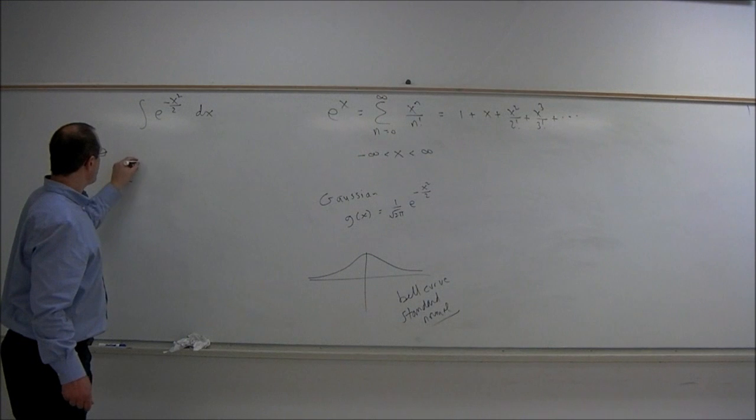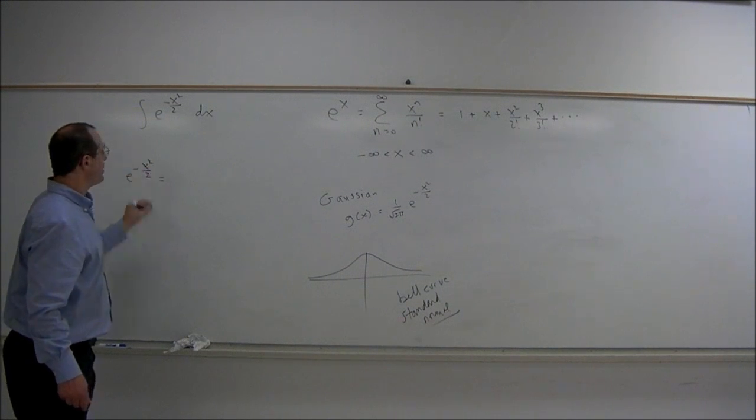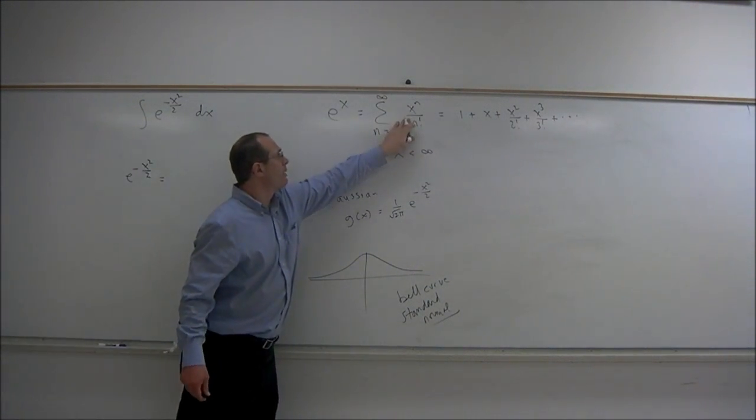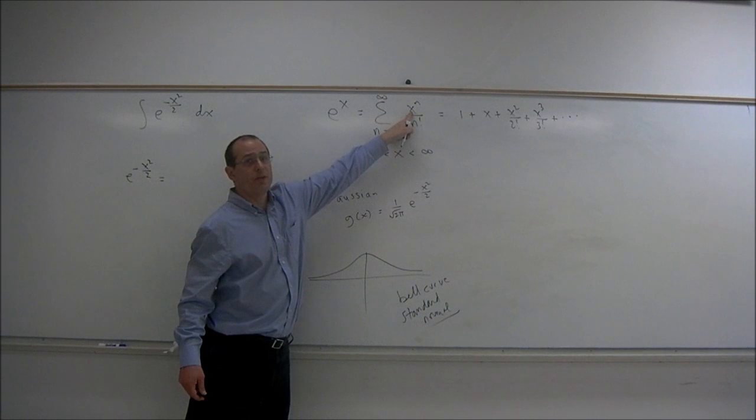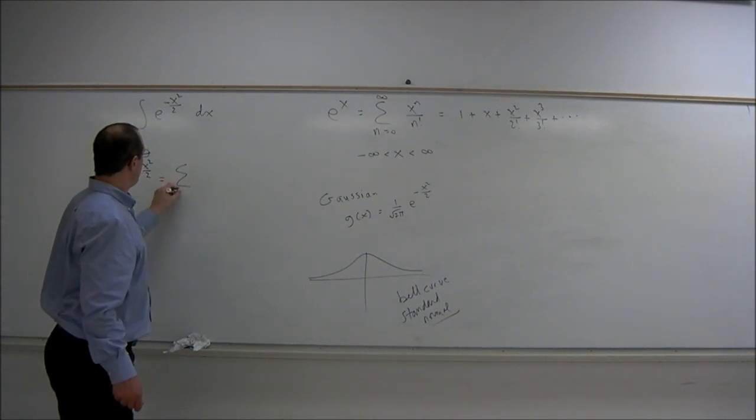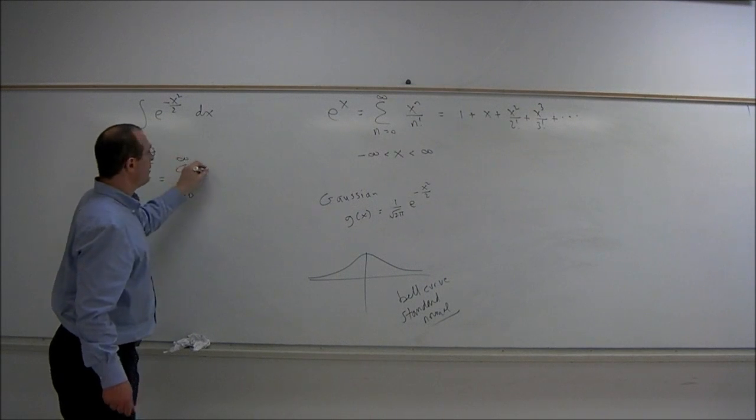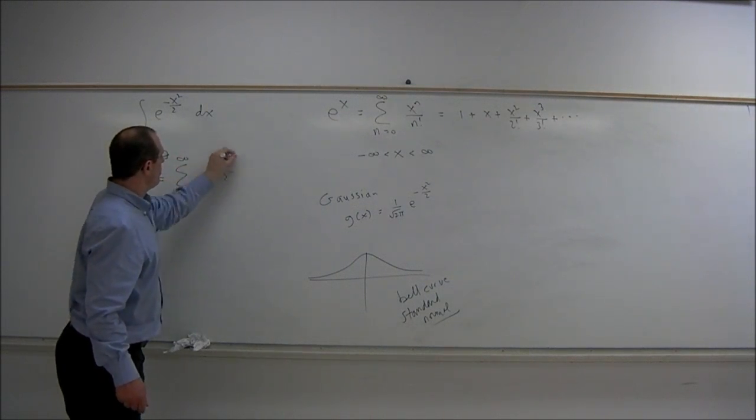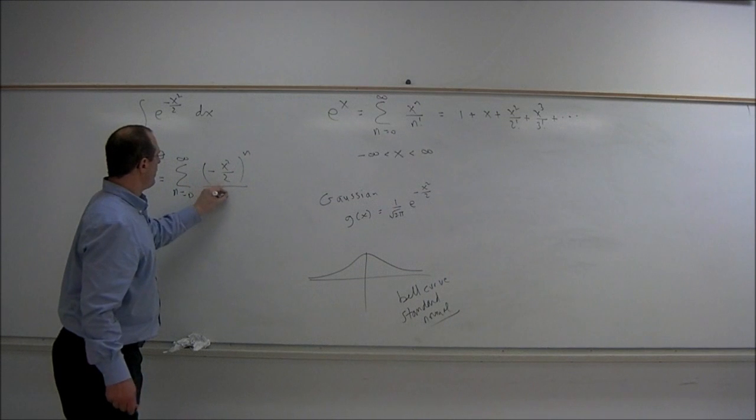e^(-x²/2) is equal to, using this formula and substituting -x²/2 in for x, we get summation n equals zero to infinity of (-x²/2)^n over n factorial.